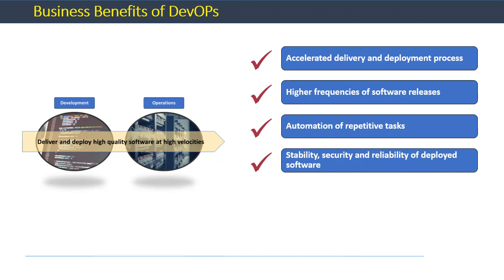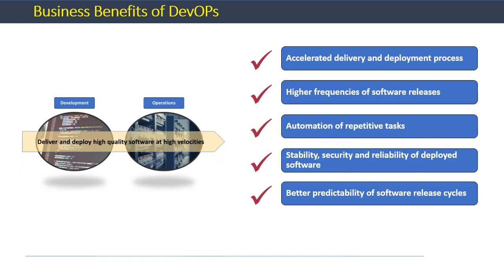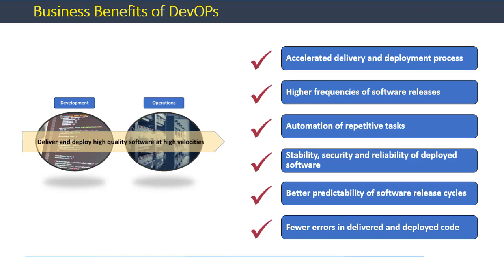The fourth benefit is stability, security, and reliability of deployed software. Automation can ensure that various policies and best practices are reflected in code or scripts, minimizing human errors and increasing compliance with organizational policies, thus ensuring stability, security, and reliability of the production environment. Another benefit is better predictability of software release cycles — due to automation, organizations get better predictability on when certain business functionality can be deployed to production. Finally, automation and constant practices of testing and integration ensure that developed code has fewer errors when run in production.